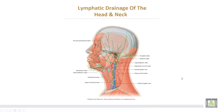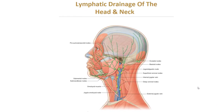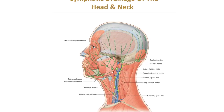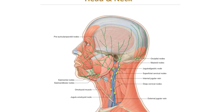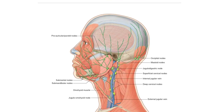These are the lymphatics of the head and neck. There is an outer ring, or superficial group, consisting of: submental, submandibular, preauricular or parotid, posterior auricular, and occipital lymph nodes. The vertical group includes the upper deep cervical nodes around the carotid sheath and the lower deep cervical lymph nodes.